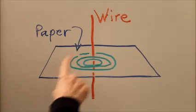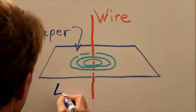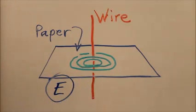What they'll tend to do is orient themselves in circles, concentric, around the point where the wire passes through the paper. That's not any of the choices we're given in this question. So the answer is E, none of the above.